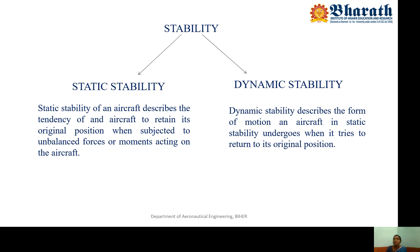Stability is classified into two categories: static stability and dynamic stability. Static describes the condition of rest, and dynamic describes motion. The static stability of an aircraft describes the tendency to return to its original position when subjected to an unbalanced force or moment. Dynamic stability describes the form of the motion — the time history of how the aircraft returns to its original position.